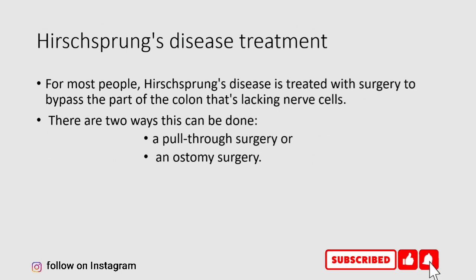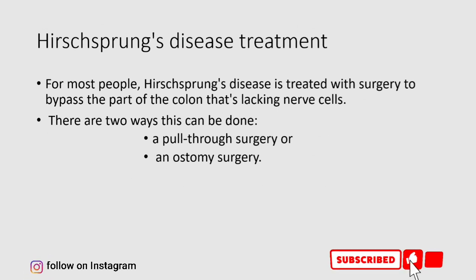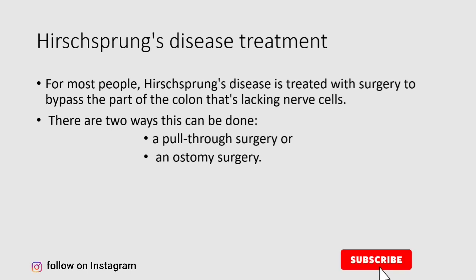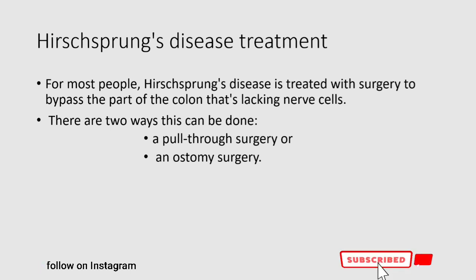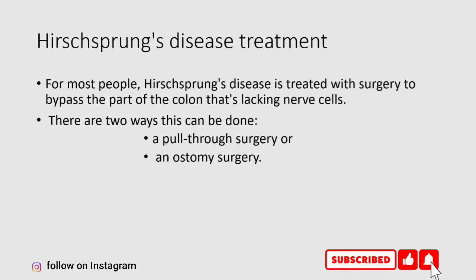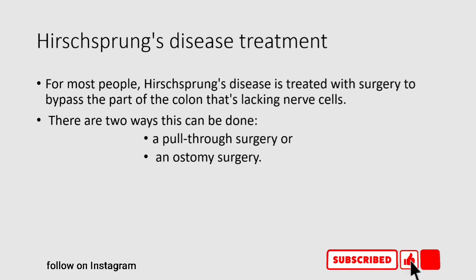Hirschsprung's disease treatment. For most people, Hirschsprung's disease is treated with surgery to bypass the part of the colon that's lacking nerve cells. There are two ways this can be done: a pull-through surgery or an ostomy surgery.